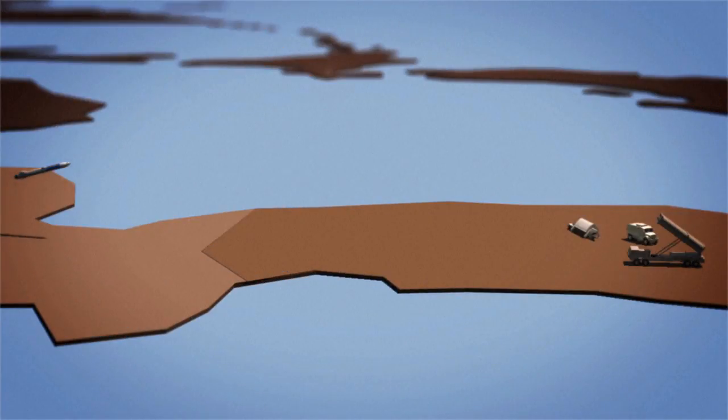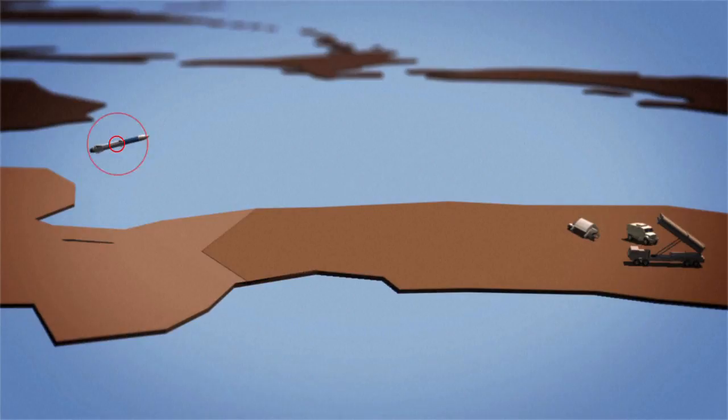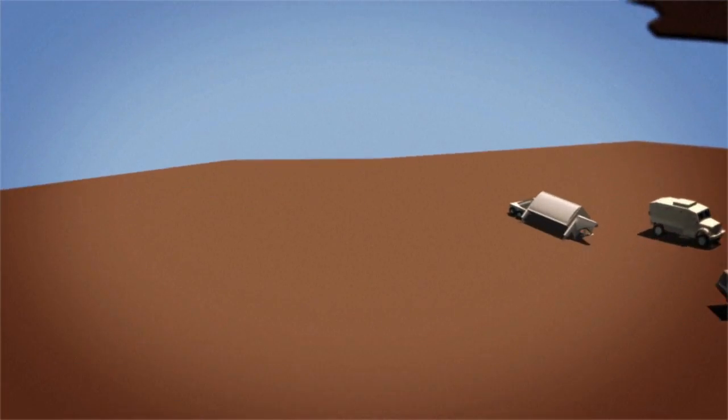THAAD is designed to intercept and destroy short- and medium-range ballistic missiles during their final phase of flight. Once radar detects the incoming threat, the target is identified and engaged. Fire control and communications support are deployed.